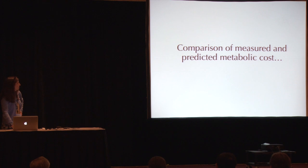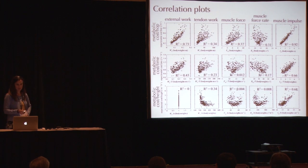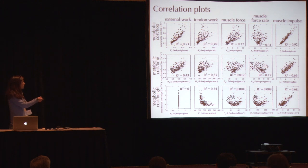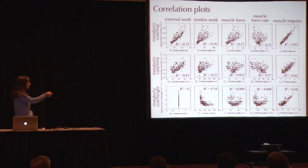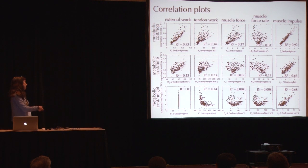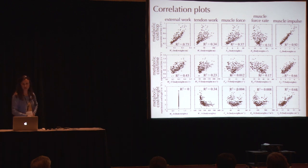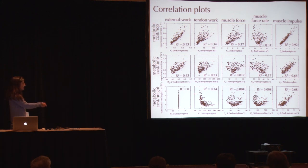Now onto the comparison of measured and predicted metabolic cost. For external work, metabolic cost per hop correlates fairly well, with an R² of 0.73, a slightly worse correlation for metabolic cost per time. For metabolic cost per height, we get a poor correlation because you're essentially dividing MGH by H — this illustrates why it's important to show all three versions of metabolic cost when determining which cost function best fits the data. Tendon work shows rather poor correlation in all cases. Muscle force similarly shows poor correlation, as does muscle force rate.